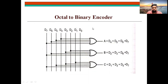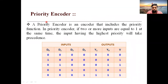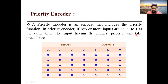Next we will come across an important encoder called the priority encoder. A priority encoder is an encoder that includes the priority function. This encoder always works on the concept of priority function, which decides which input is to be activated first — which input is given the highest priority and is to be solved first. Depending on the priority function assigned by the user, this encoder will start its operation. If two or more inputs are equal to 1, then the priority function determines which takes precedence.